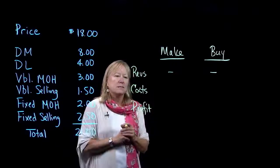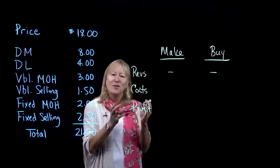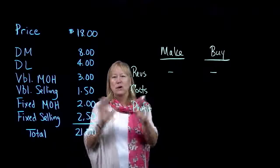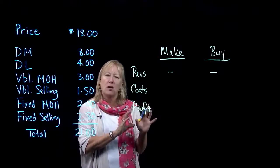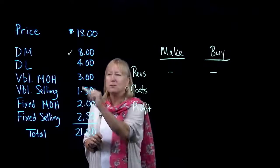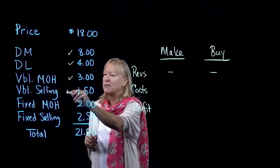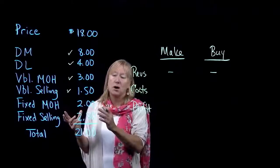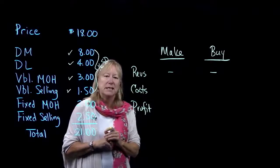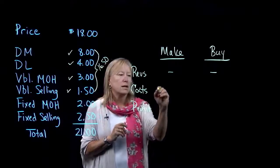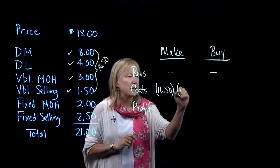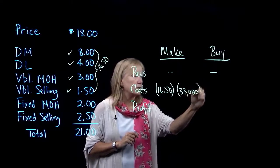If we make these bags, the cost we would incur would be the additional variable costs associated with making them. If we make these 2,000 bags, we're not going to incur more fixed costs — we'll just incur more variable costs. Direct material, direct labor, variable manufacturing overhead, variable selling costs — those are our variable costs in this situation. They total to $16.50 per bag, so for 2,000 bags that would be $33,000 additional cost.